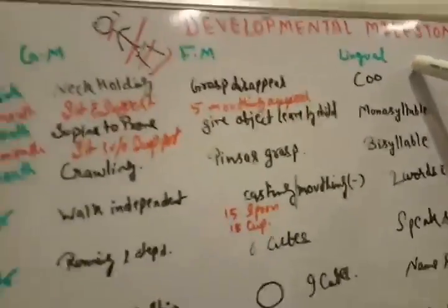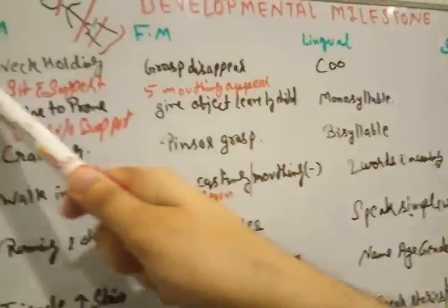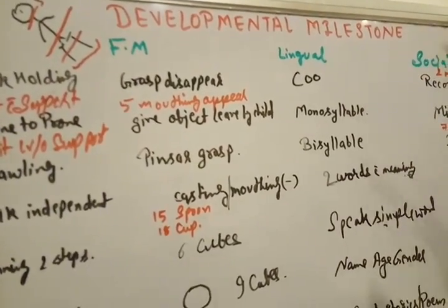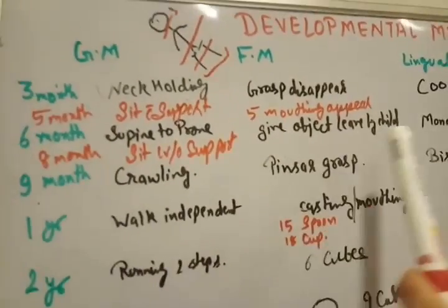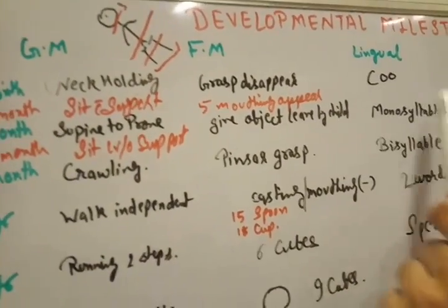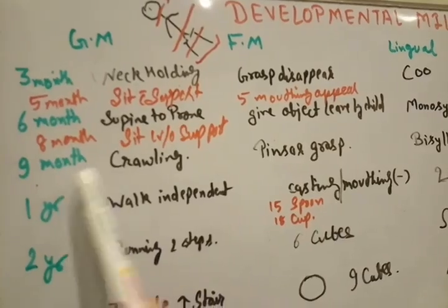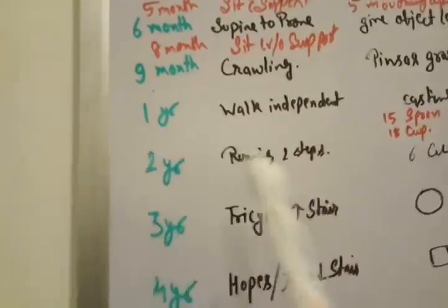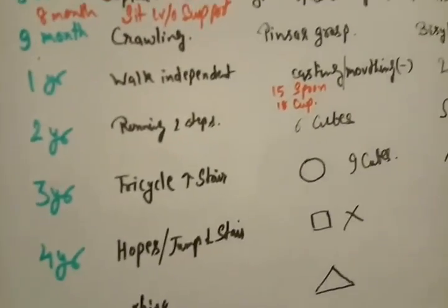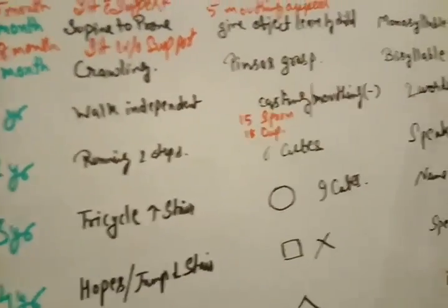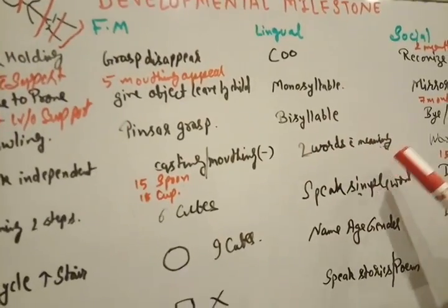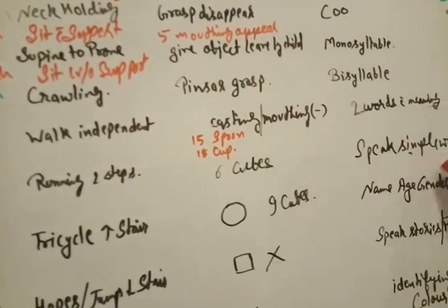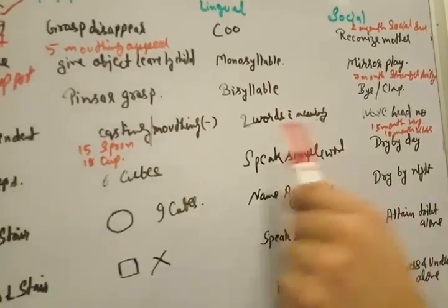Now lingual development. At 3 month of age, a child speaks ku, ku sounds. At 6 month of age, child is monosyllable. And 9 month of age is bi-syllable. In 1 year of age, child will be able to speak 2 words with meaning. And at 2 year of age, child speaks simple words.